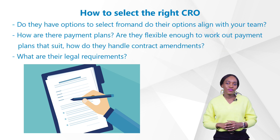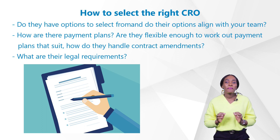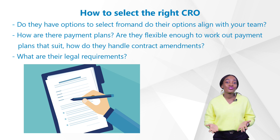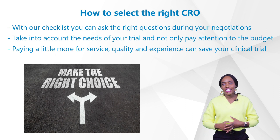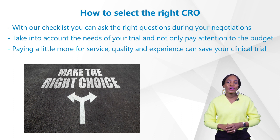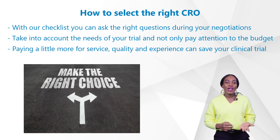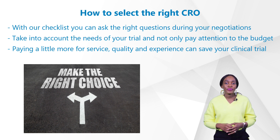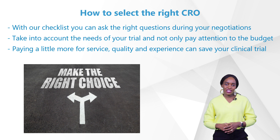Do they have options to select from? For example, with their EDCs — do their options align well with your team? How are their payment plans? Are they flexible enough to work out a payment plan that suits you? And how do they handle contract amendments? What are their legal requirements? I hope with these on your checklist, you can ask the right questions during your negotiations. Taking into account the needs of your trial and narrowing your selection based on your checklist, rather than only paying attention to the budget and going with the cheapest CRO — paying a little more for quality and experience may just save your clinical trial.